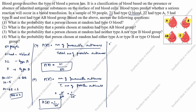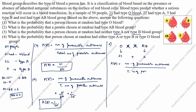Third question: what is the probability that a person chosen at random had neither type A nor type B blood? The blood groups present are O, A, B, and AB. So cancel A, cancel B. O blood group people: 21, AB blood group people: 2. Add these: 23. P of E is equal to number of favorable outcomes divided by total number of possible outcomes, equal to 23 divided by 50.